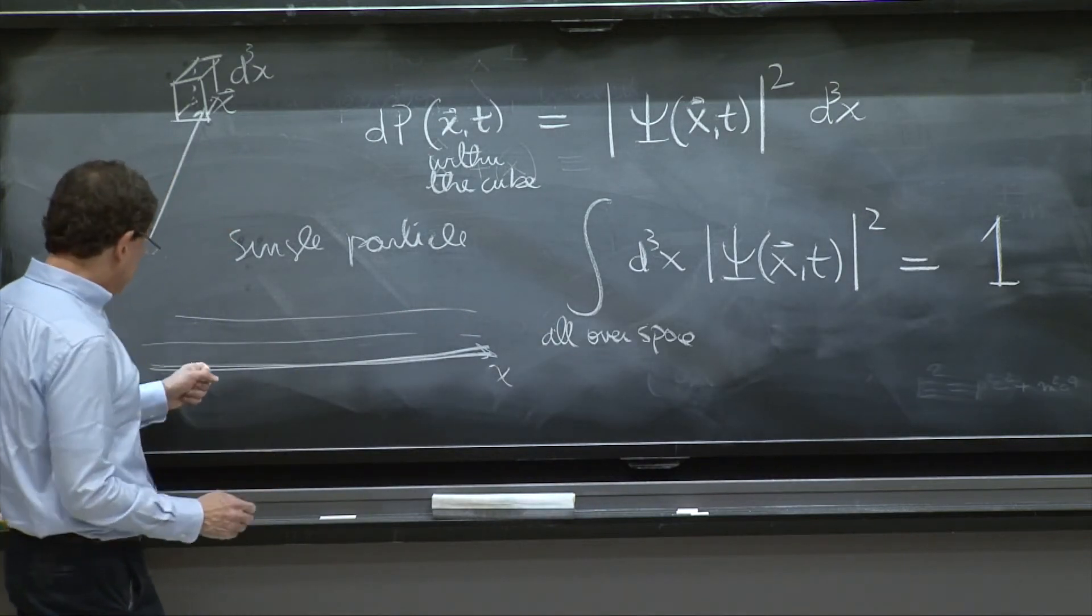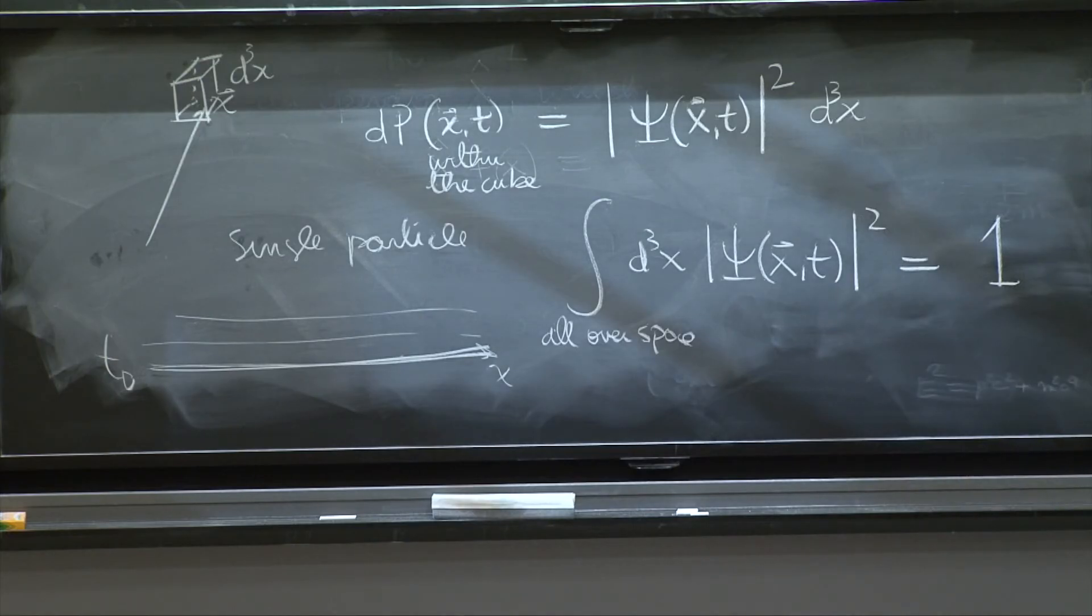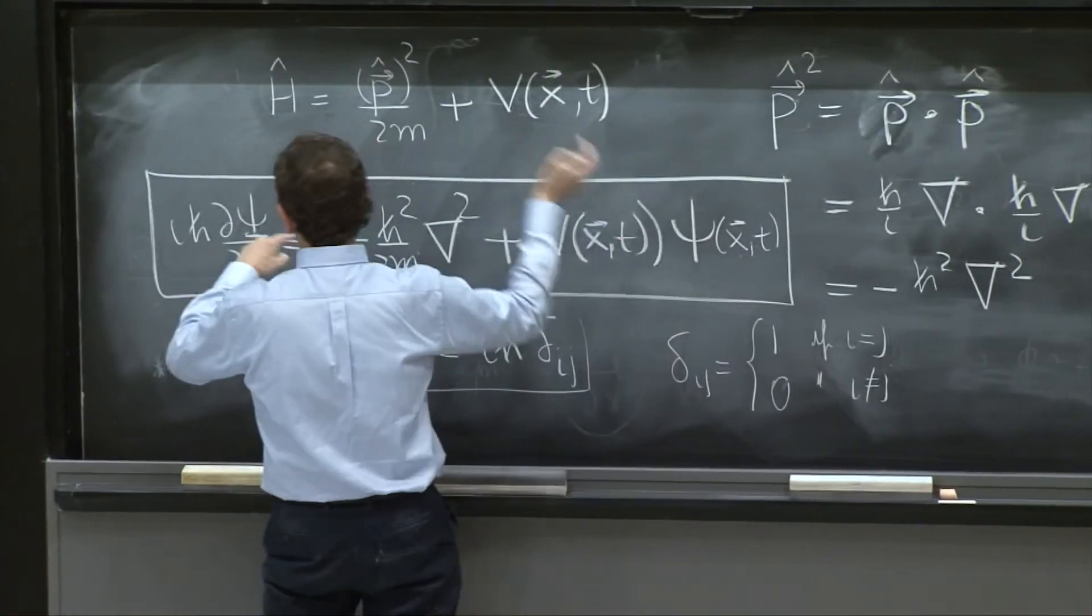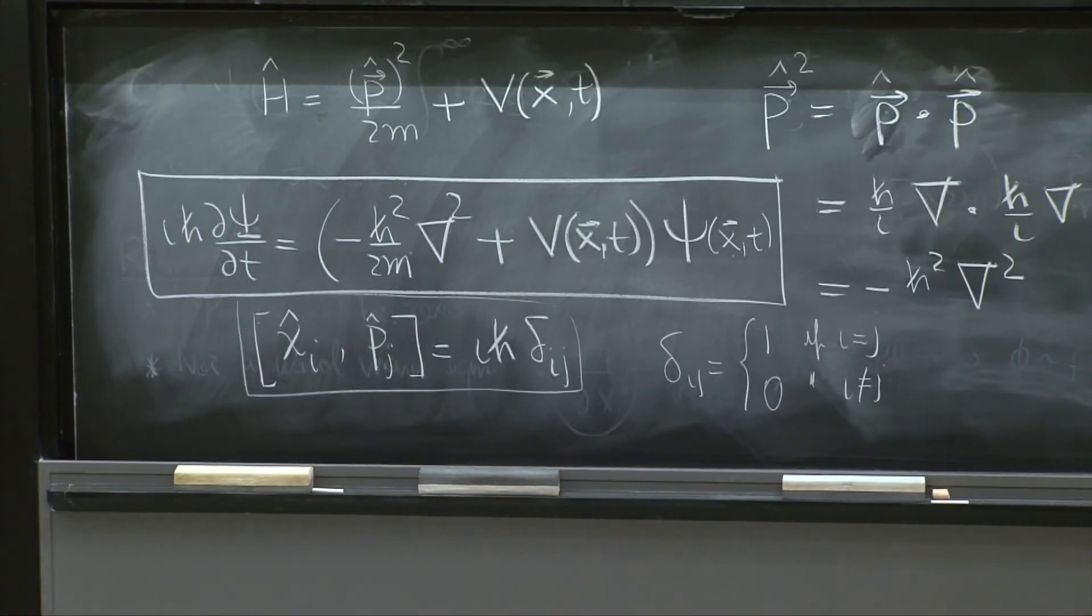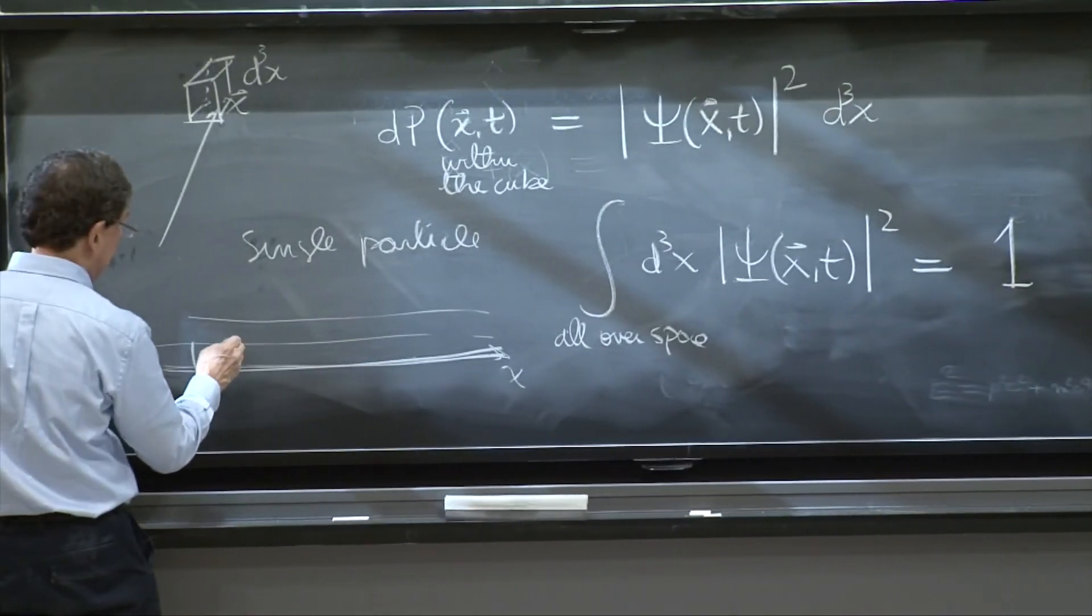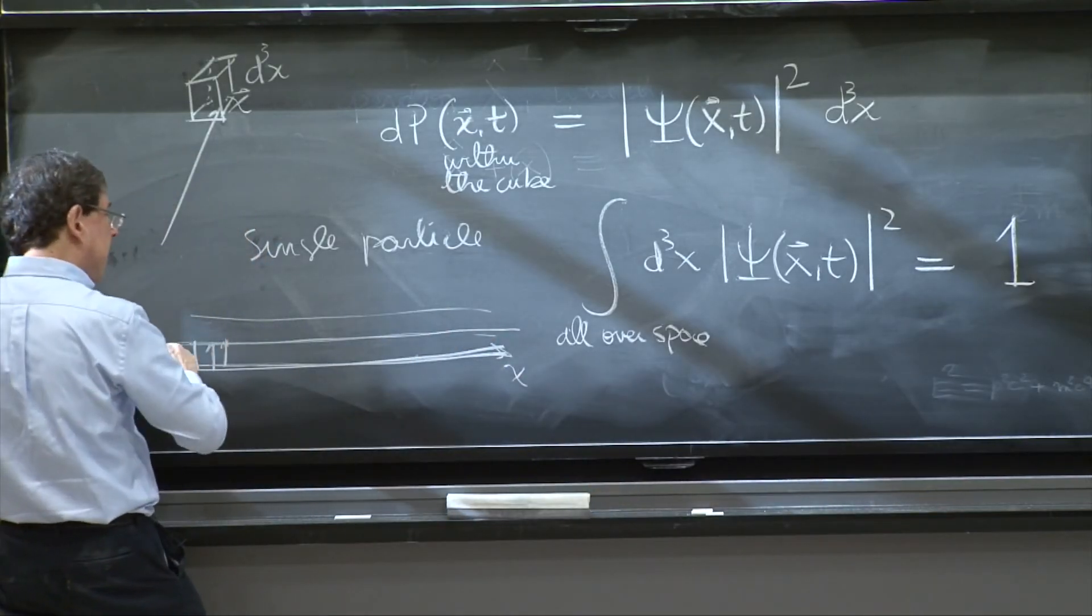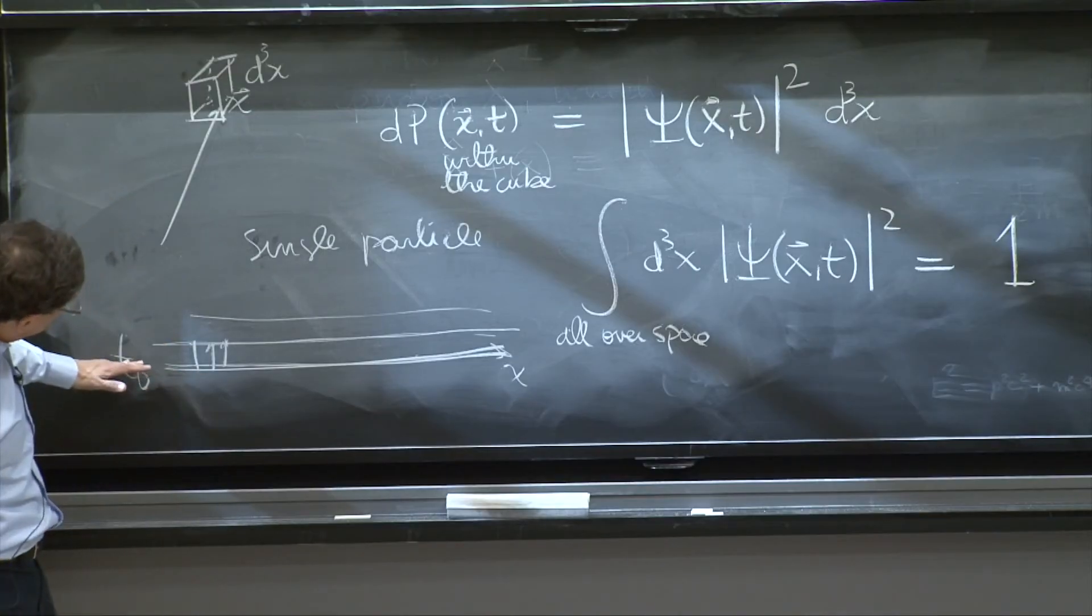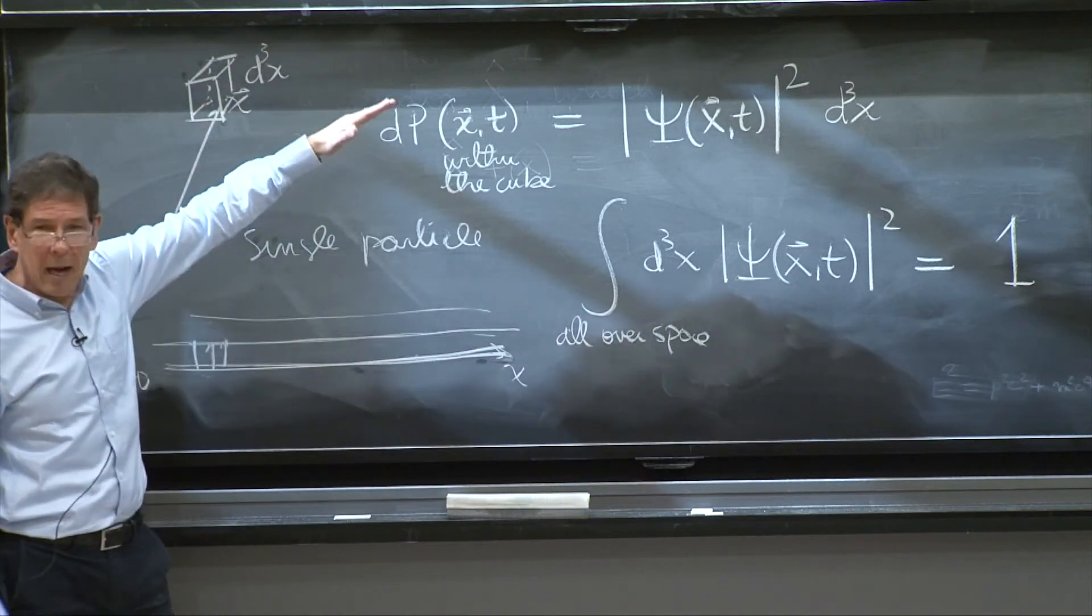The Schrodinger equation implies that that determines the wave function for any time. Why? Because if you know the wave function throughout x, you can calculate the right hand side of this equation for any x, and then you know how psi changes in time. And therefore you can integrate with your computer here the differential equation, and find the wave function at a later time all over space, and then at a later time.